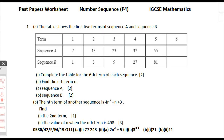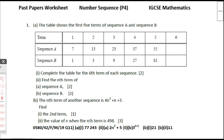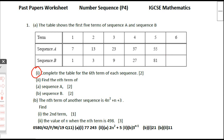Worksheet number 4c, homework question number 1, part a, part 1: complete the table for the sixth term of each sequence. We need to fill in two values, so let's look at what is happening.